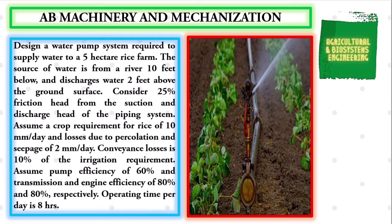Consider 25% friction head from the suction and discharge head of the piping system. Assume a crop requirement for rice of 10 millimeters per day, and losses due to percolation and seepage of 2 millimeters per day. Conveyance losses is 10% of the irrigation requirement. Assume pump efficiency of 60%, and transmission and engine efficiency of 80% and 80%, respectively. Operating time per day is 8 hours.